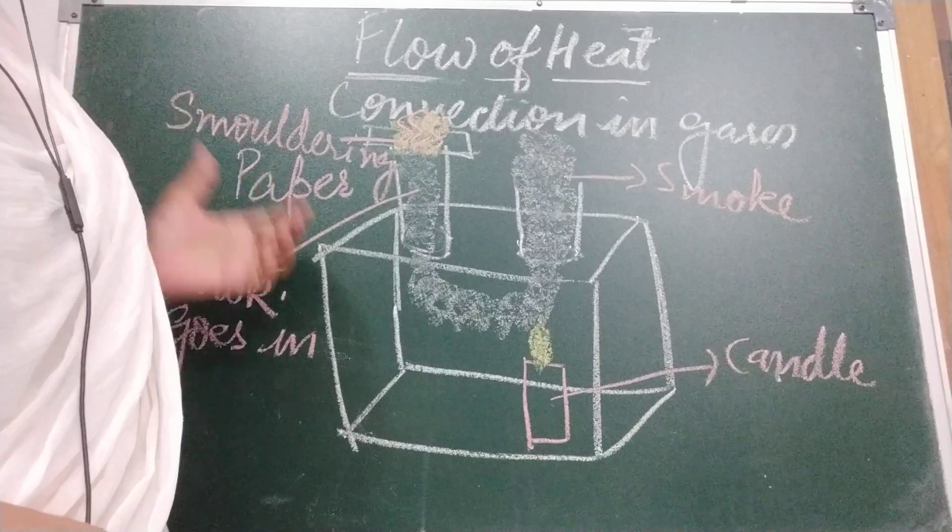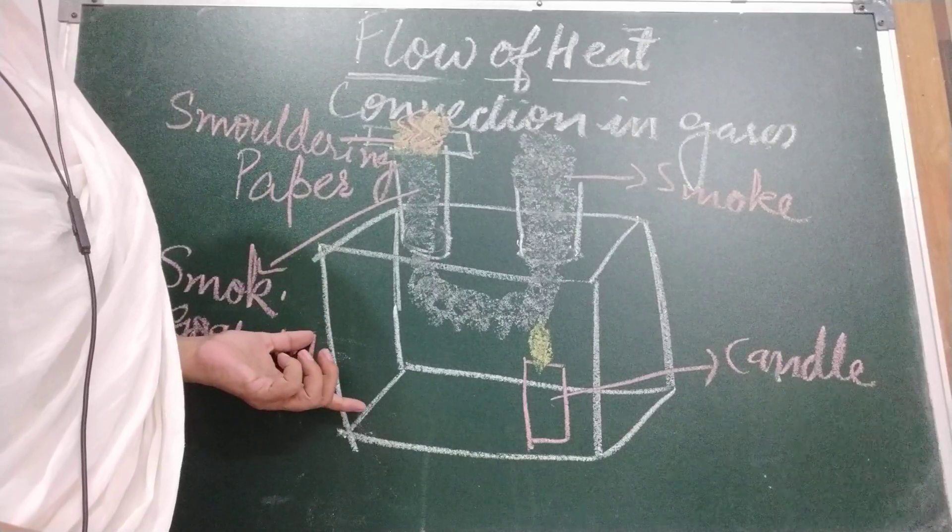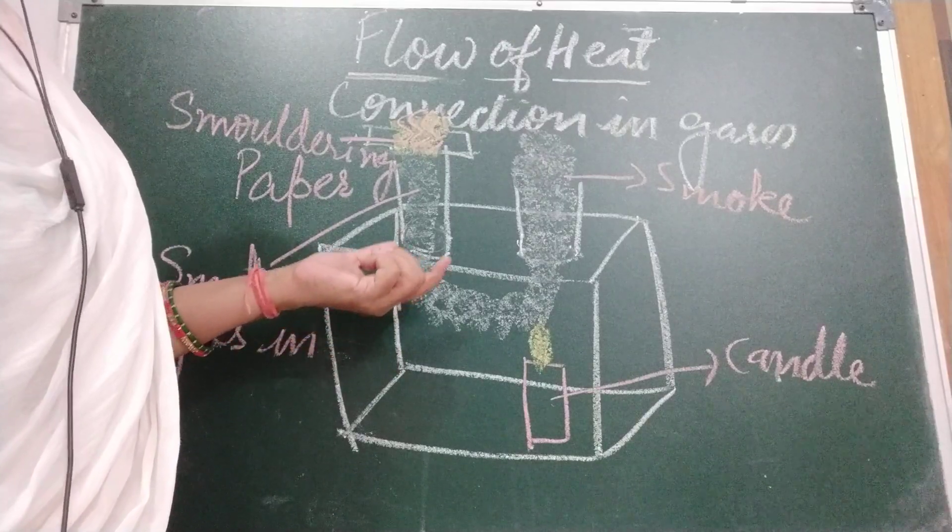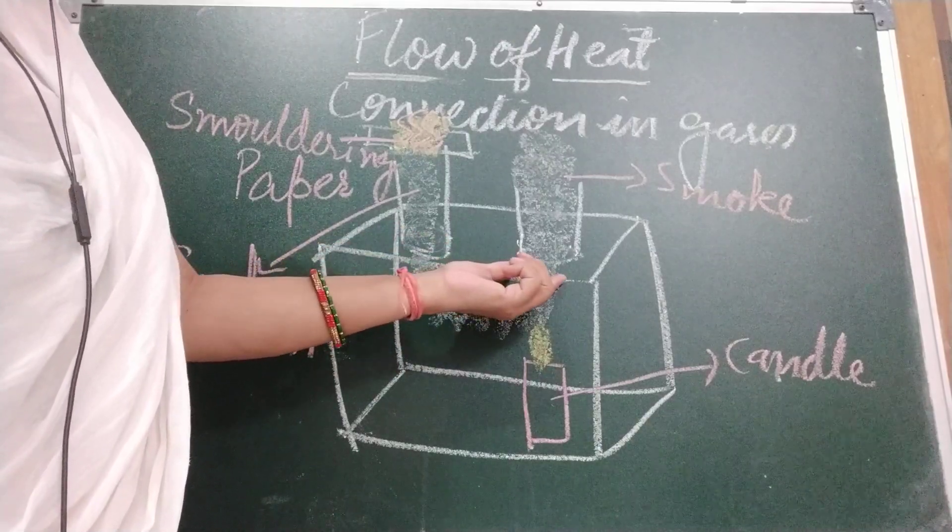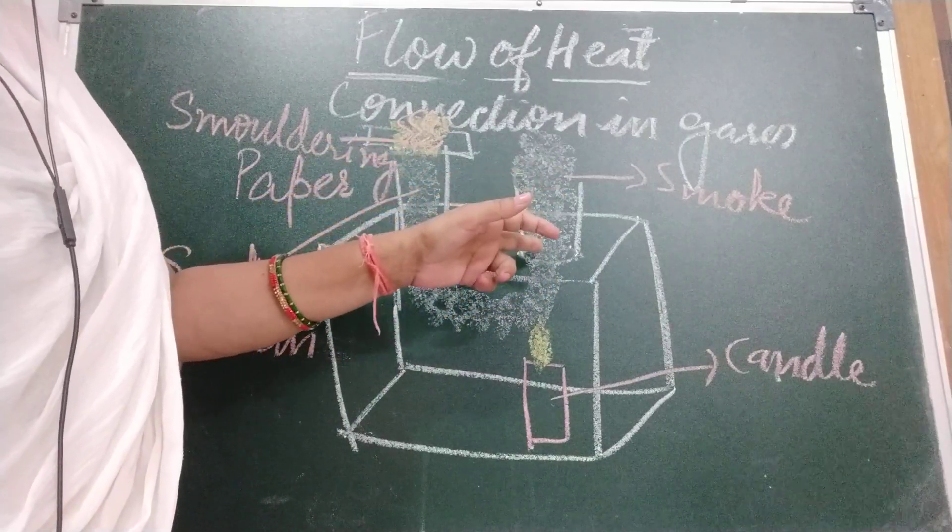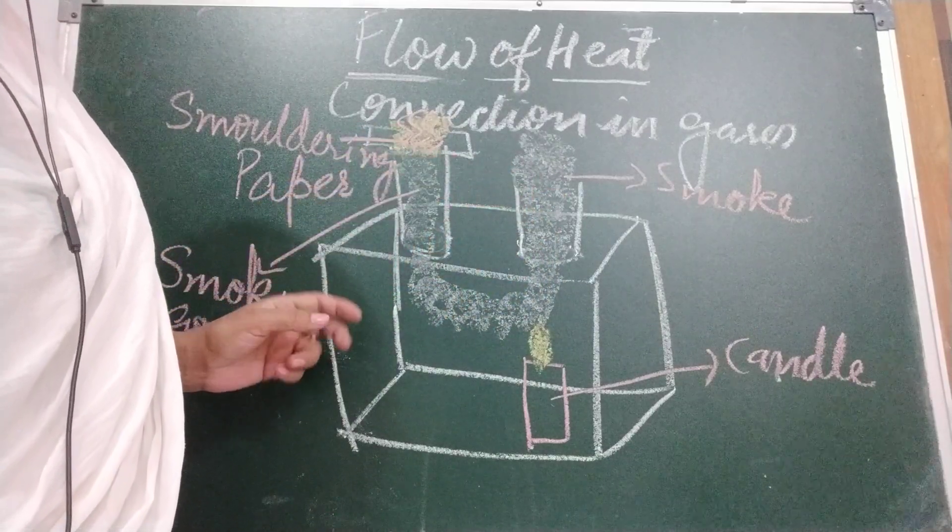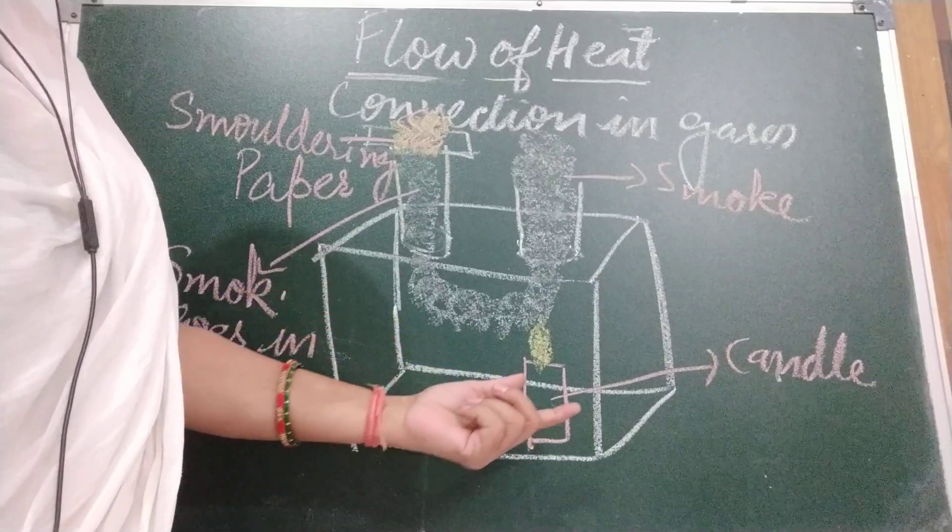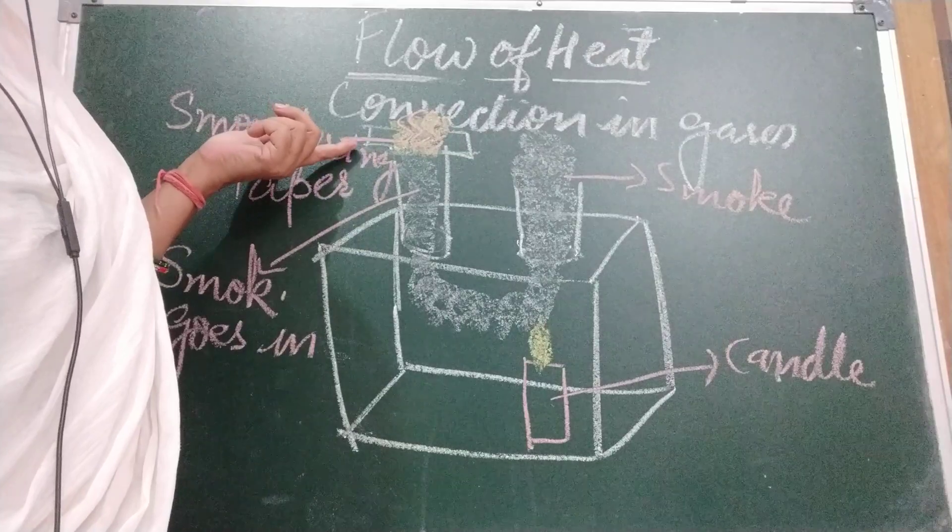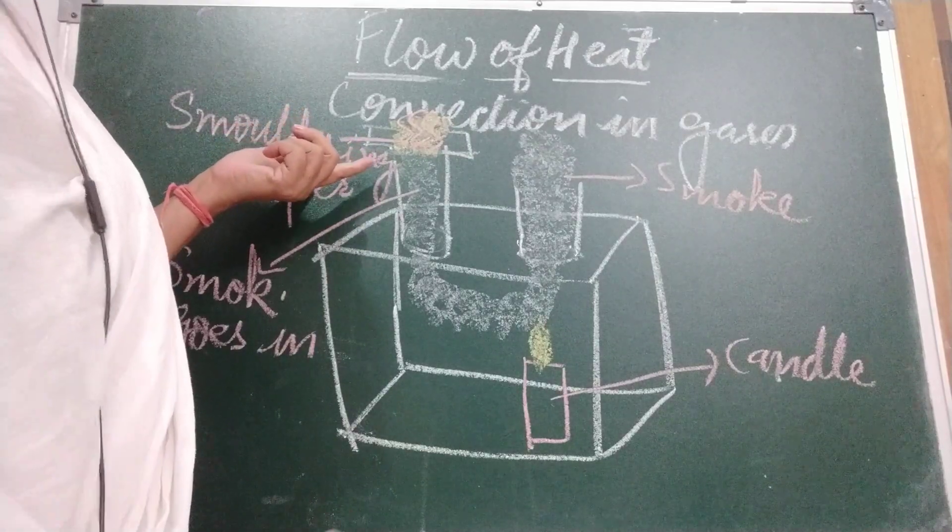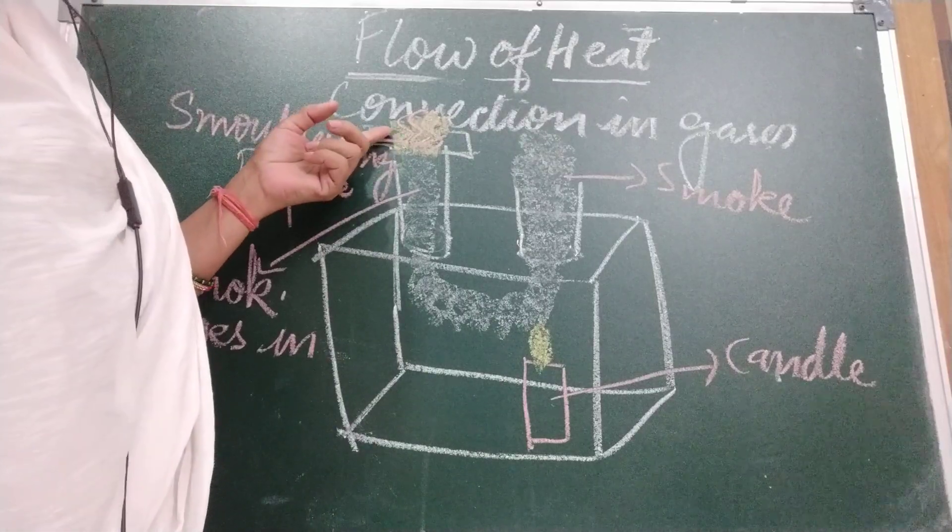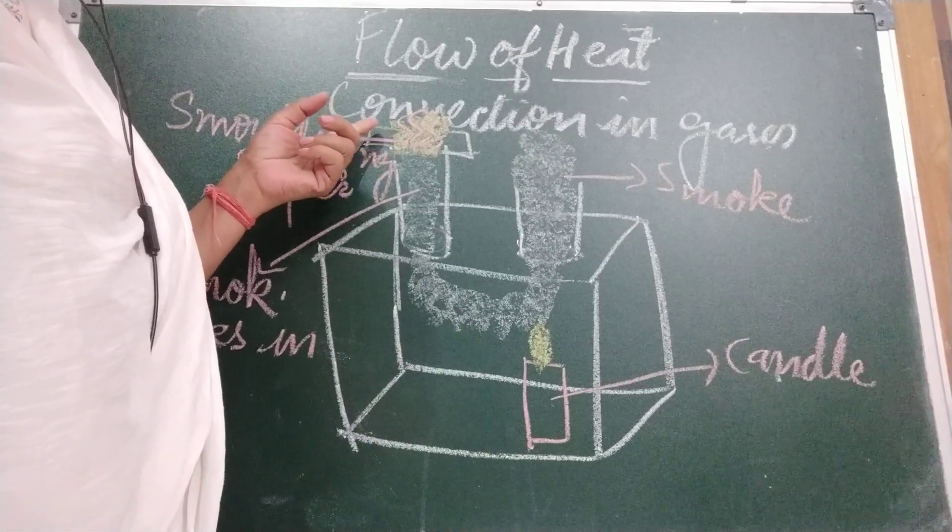For this activity we will take a closed rectangular glass box with two holes on its top. Fit two white glass tubes to form chimneys. Put a small lighted candle below one of the chimneys. Hold a smoldering piece of paper at the top of the other chimney. You are seeing this smoldering paper.